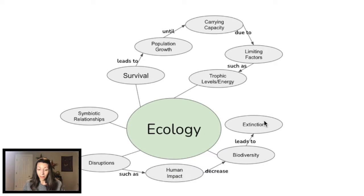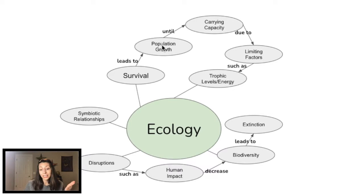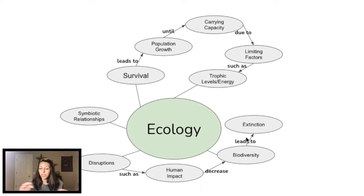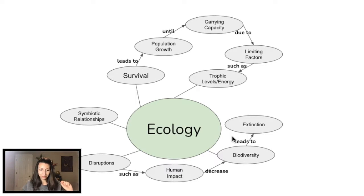So let's take a look at what I created here. I have ecology in the middle, and a main theme in ecology is the survival of organisms. Survival of any population leads to population growth until it reaches that carrying capacity, and this is due to limiting factors such as energy availability in the environment. I also have symbiotic relationships branching out, and disruptions down here — such as how human impact can decrease biodiversity, which eventually can lead to extinction. You can see how I'm starting to make connections between all of these different concepts that may link back to some other units as well, like speciation and extinction from evolution.